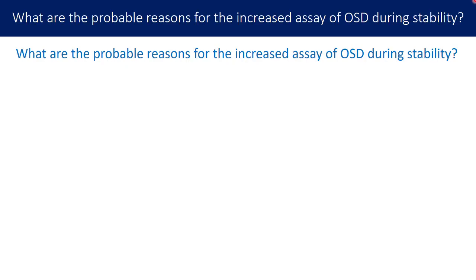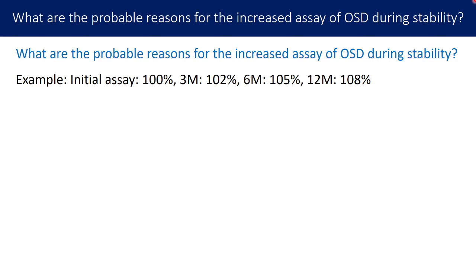What are the probable reasons for the increased assay of oral solid dosage form during stability? Here is an example for the audience: the initial assay is 100%, at the third month assay is 102%, at sixth month assay is 105%, and at twelfth month assay is 108%. This is the situation we are going to discuss.